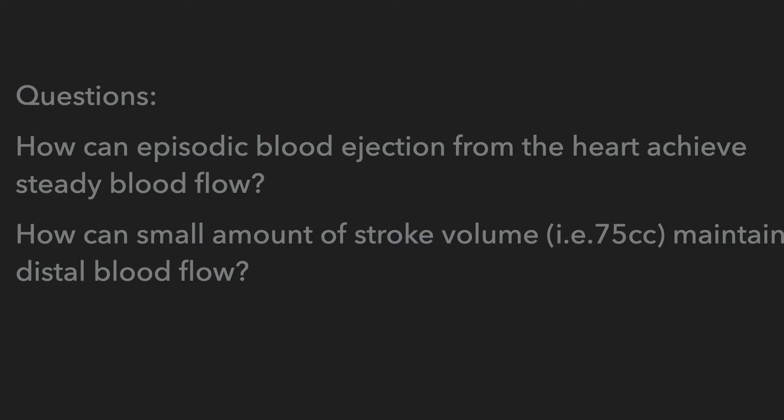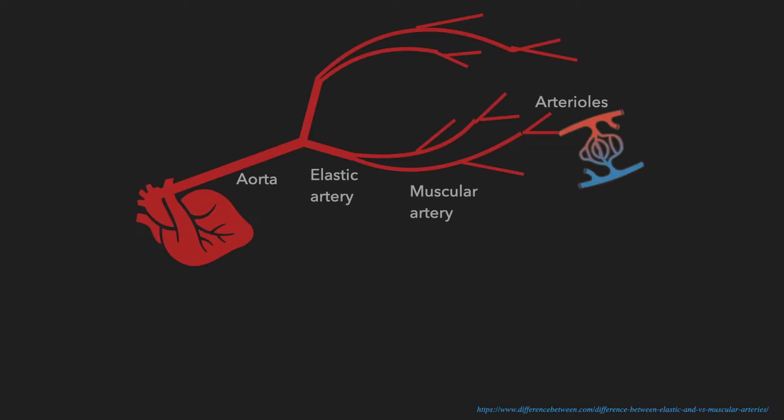By answering those questions, I want to draw your attention to the distribution of the arterial tree. If there is a stroke volume coming out from the heart, it will go to the aorta first, then to the elastic artery, and to the muscular artery. Eventually, before going to the capillary, it will reach the arterioles. Those terms are not only about the change of calibers from proximal to distal — it's also about differences in histology.